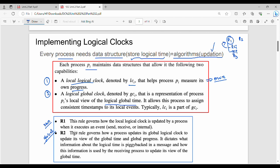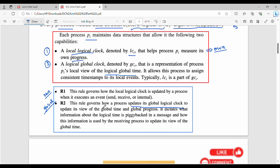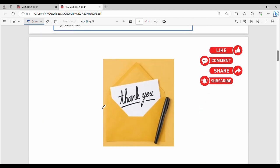Rule number two governs how a process updates its global logical clock to update its view of the global time. This is the GC_i update and this is the LC_i update. This is the framework. If you enjoyed the video, please like the video.